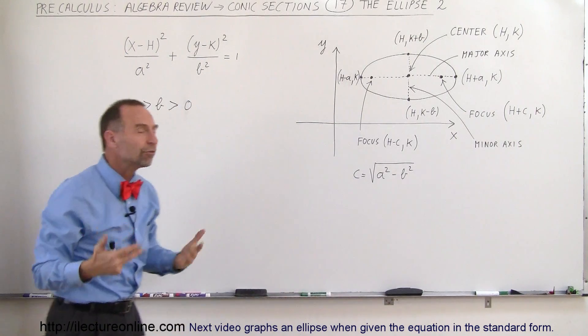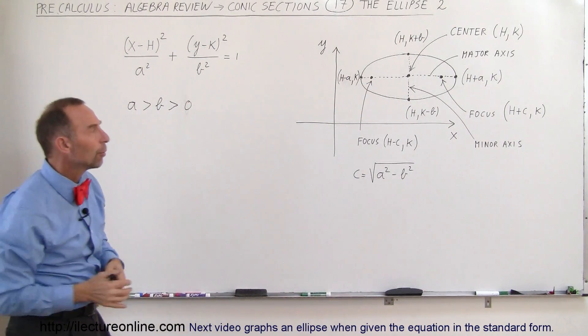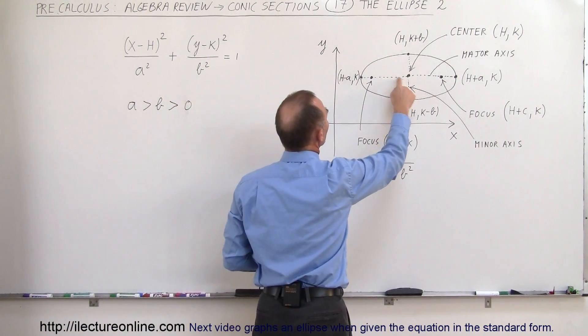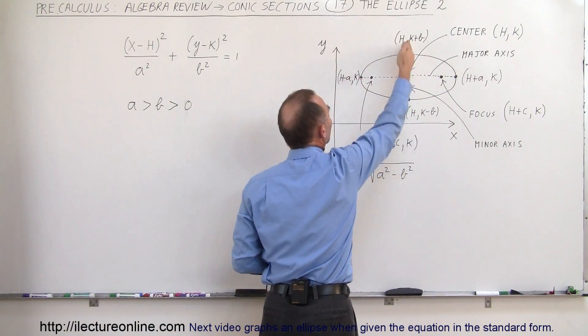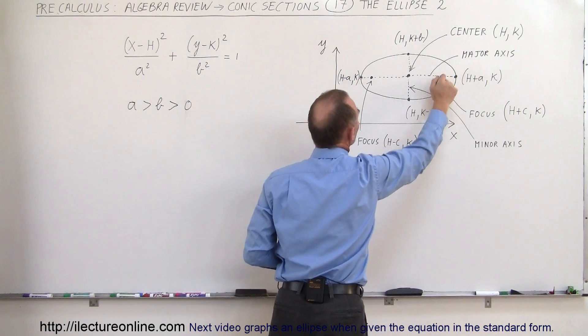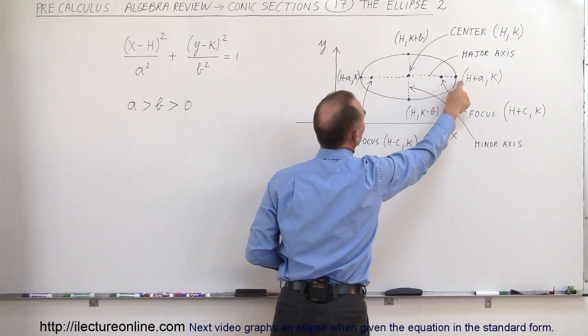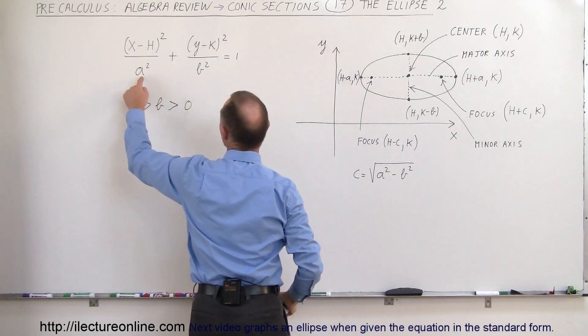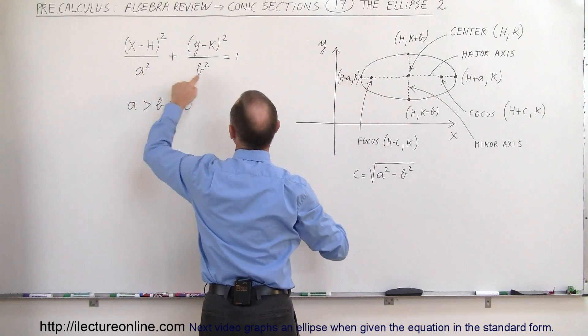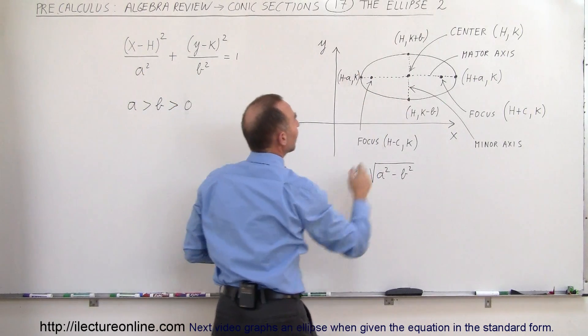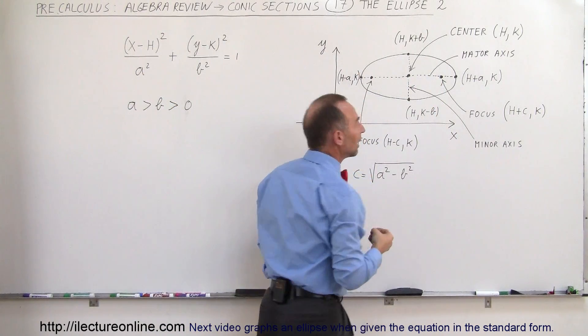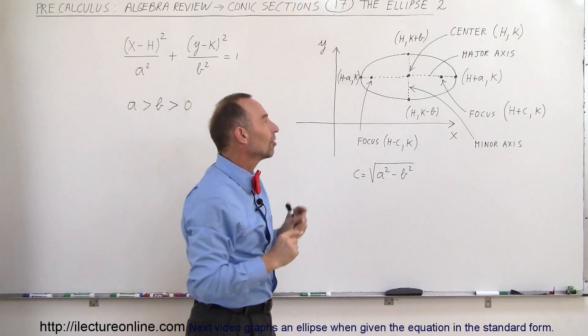So that gives you a pretty good feel for an ellipse, all the various important points on an ellipse. It gives you the center, it gives you the four vertices, the minor axis, the major axis. The distance from the center to the vertex is defined by a in the horizontal direction, by b in the vertical direction, and the focus is simply a measure of how flattened out the ellipse is.